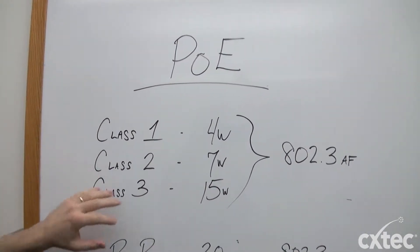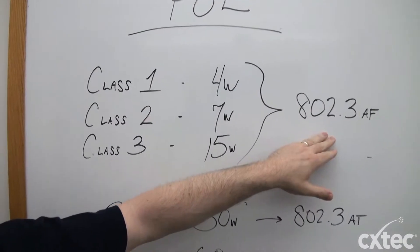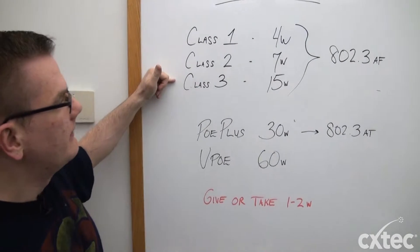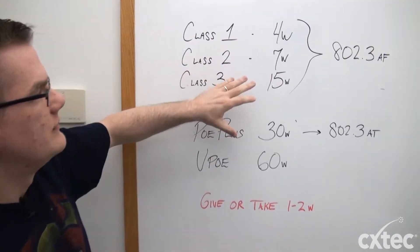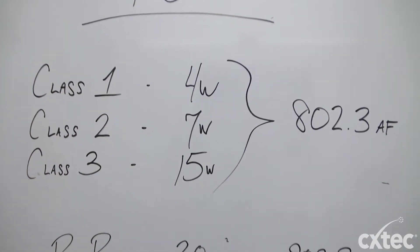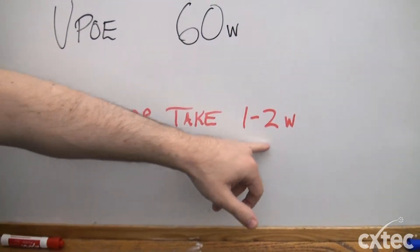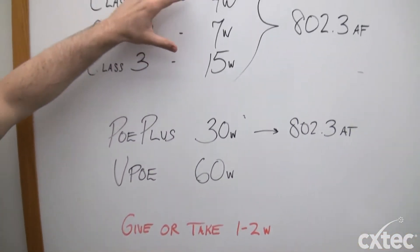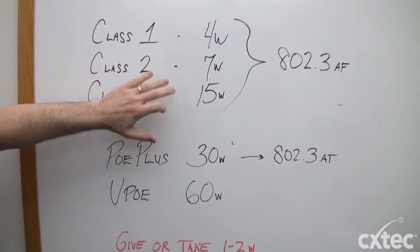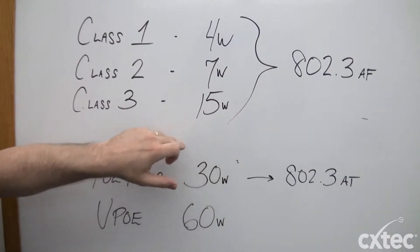We'll start very simply with the 802.3af standard, which is something you've probably heard when you've considered switches in the past. That standard is comprised of three classes: one, two, and three. These numbers are the wattages you can expect with each class. Class one is about four watts — give or take one or two watts, and in some cases it may be more, so these are rough numbers. Class two is around seven watts, and class three is 15 watts, or you'll often see 15.4 watts.